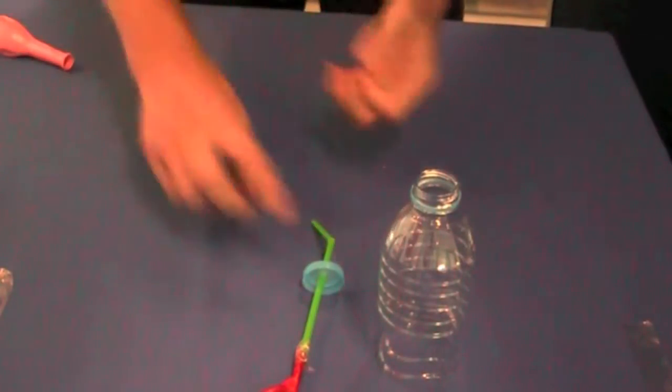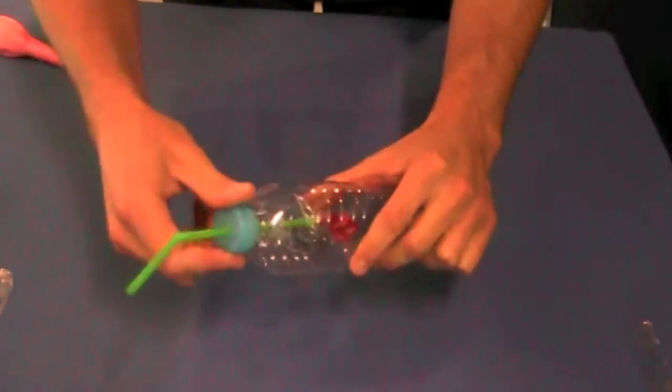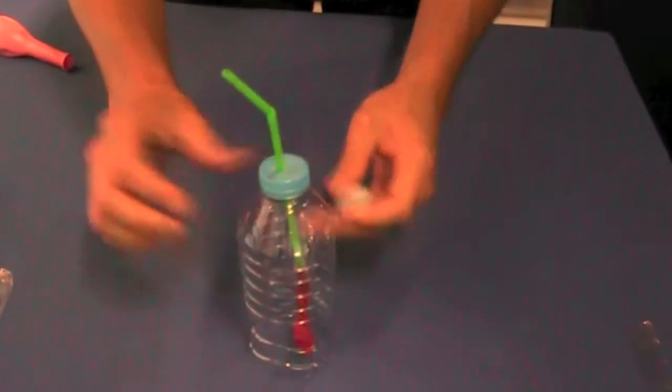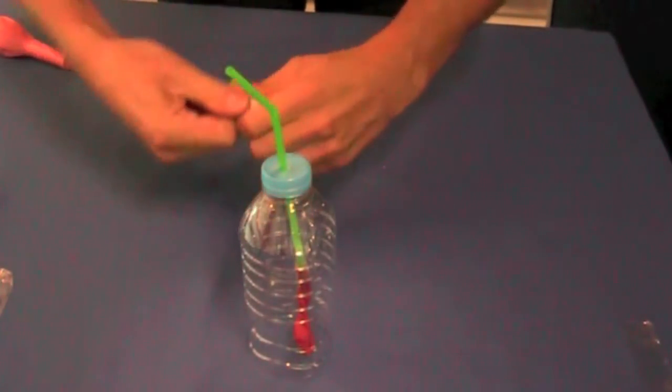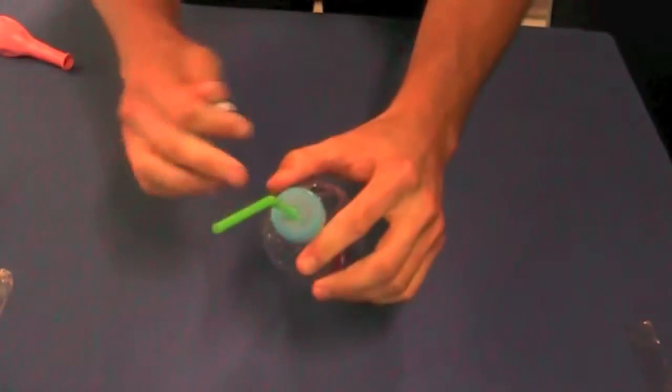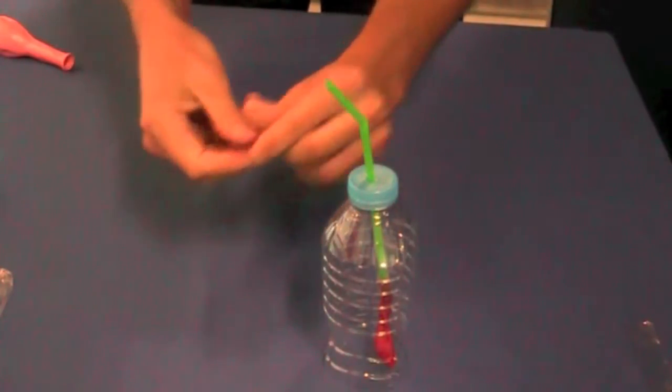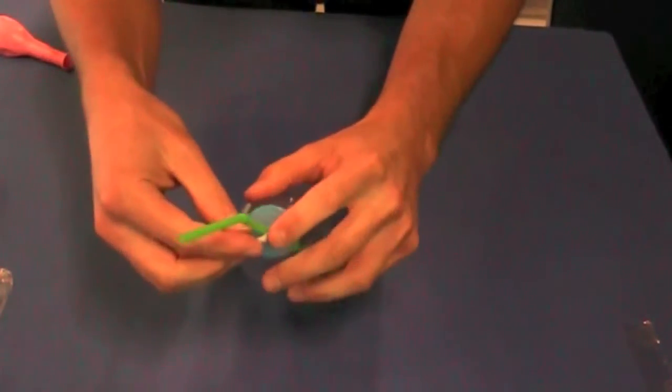Next thing to do is to put the lung into the bottle and screw the cap back on. And then we're going to take some of our blue tack and make the cap airtight. Plasticine would work as well. Just make sure that there's no gaps around the top here.